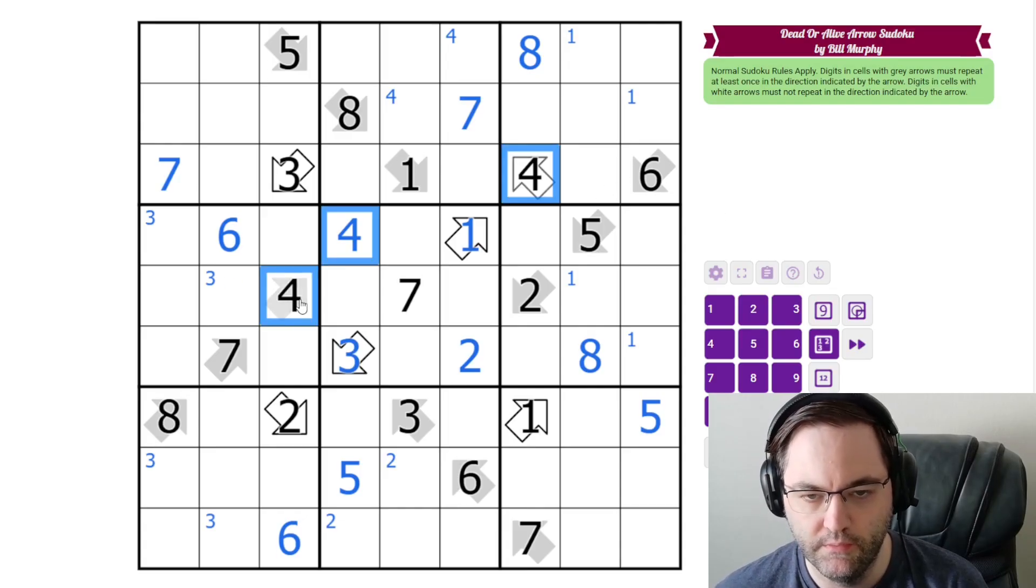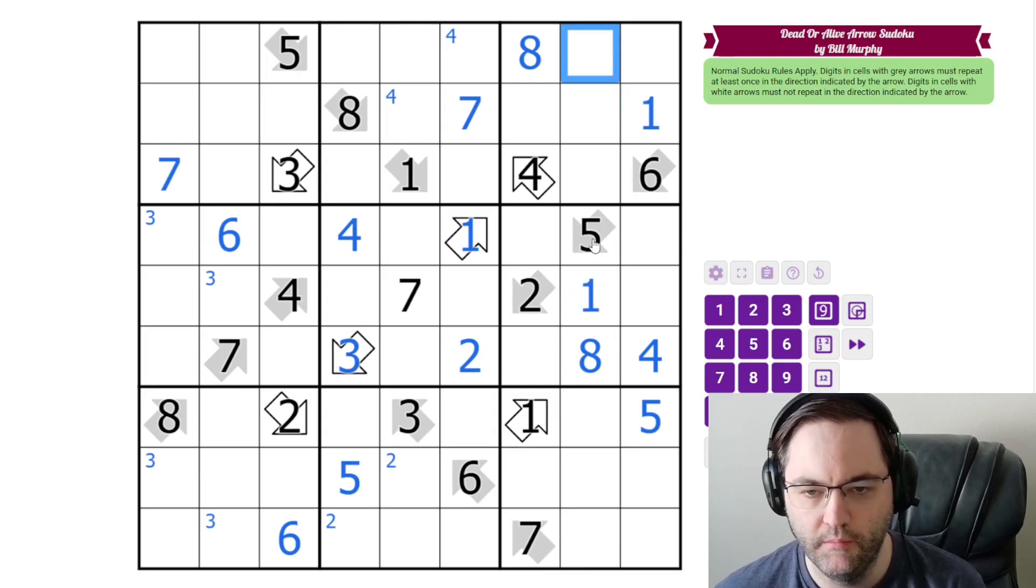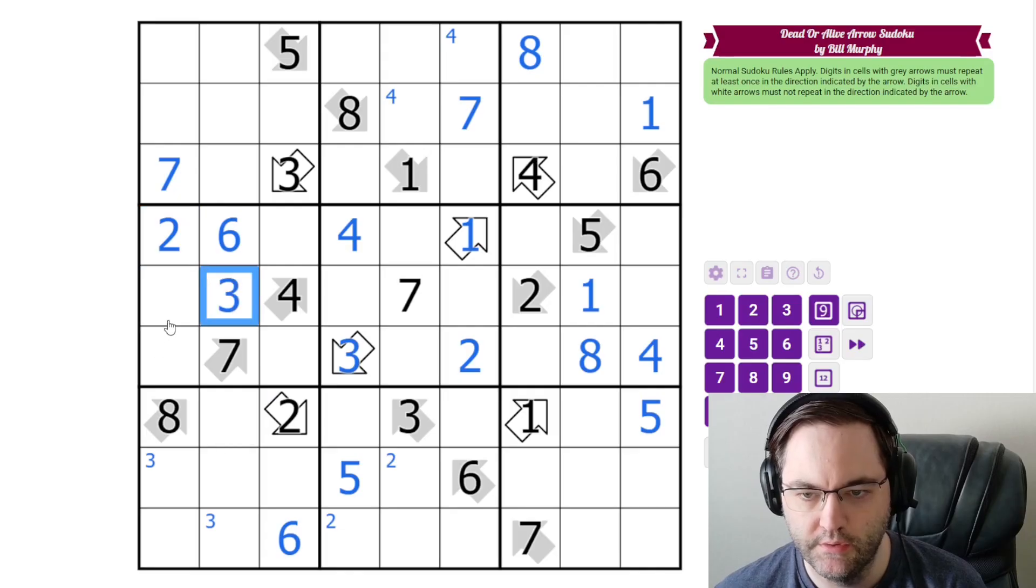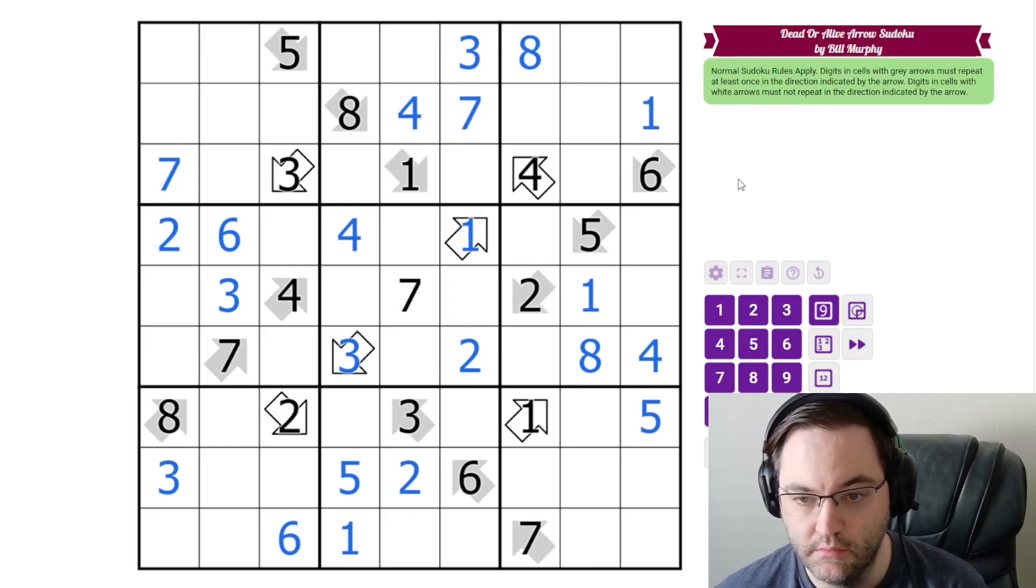So let's see what we can do. 4 has to go here, and that's going to place our 1s over here. 2 has to go here. That's going to place the 3 and the 3. 3 in this box goes here. And what digit did we not go? 1. 1 goes here. 2 goes here. And now we really do just have classic Sudoku left.